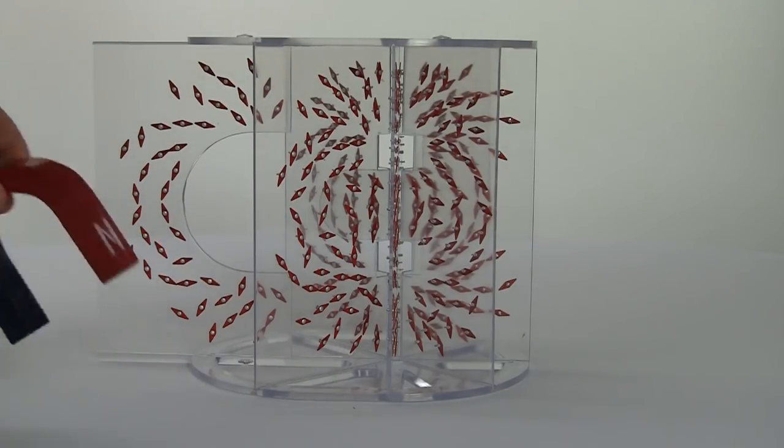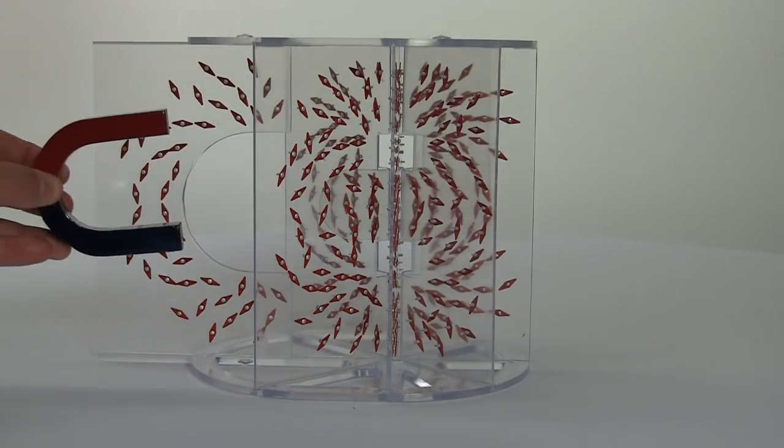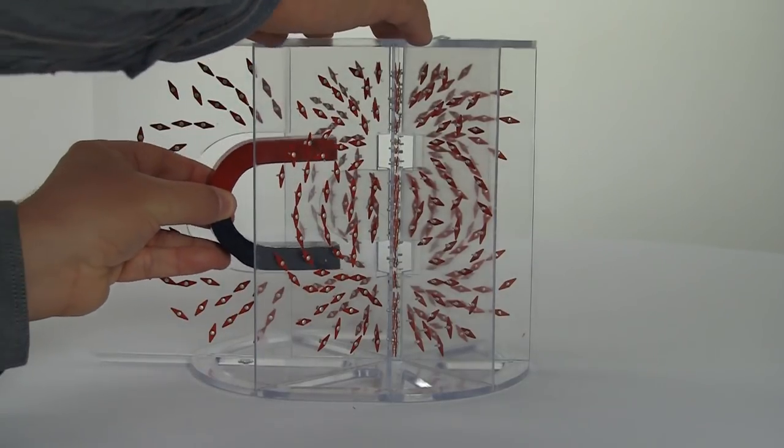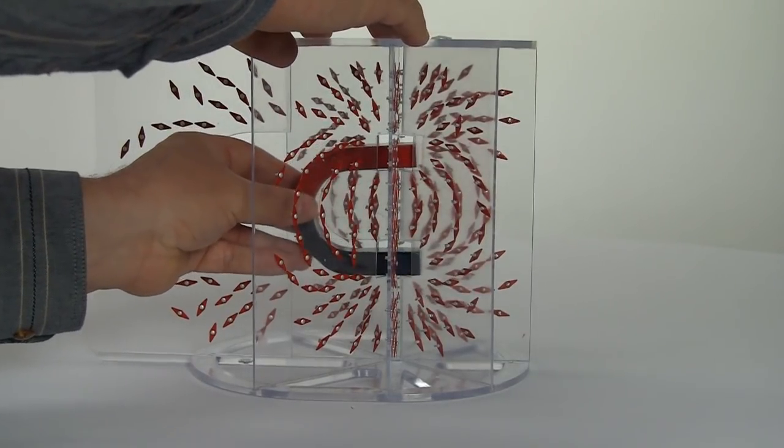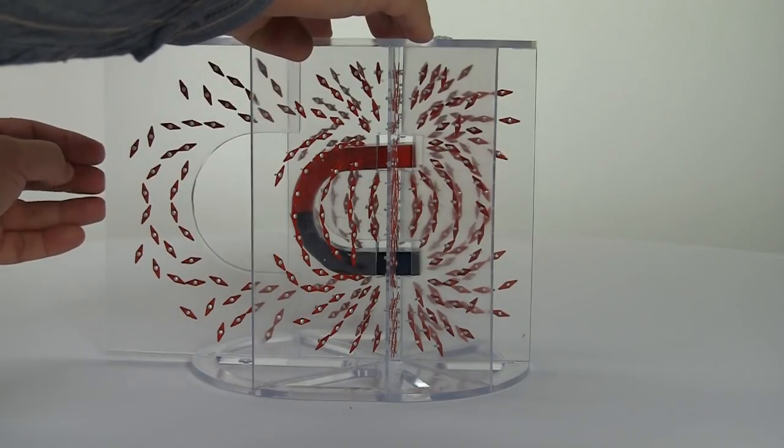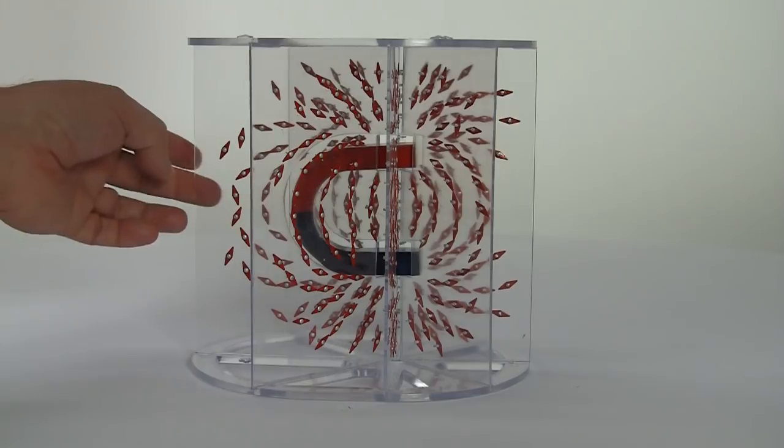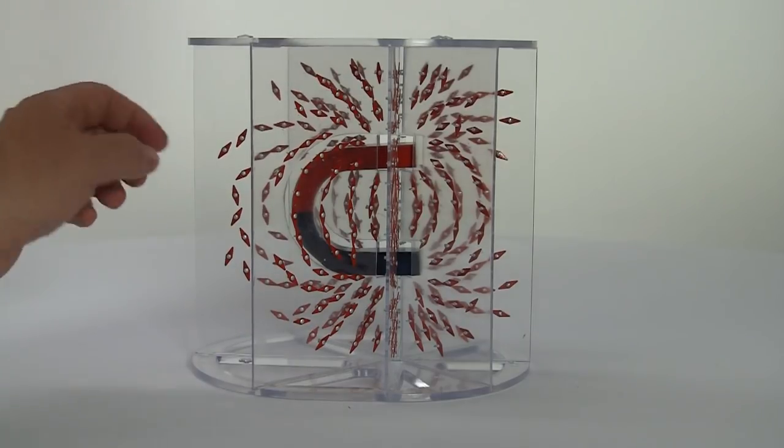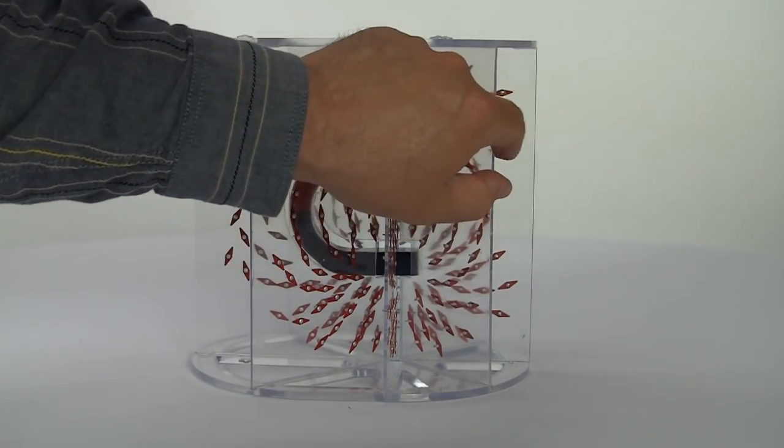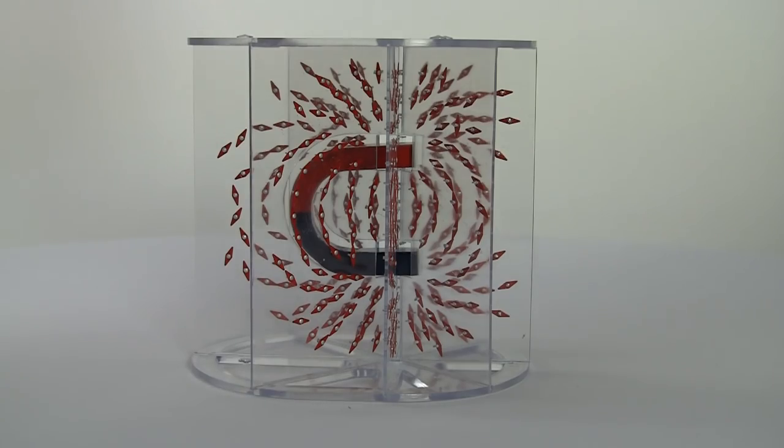Okay, here's the magnetic field demonstrator and we can insert the horseshoe magnet into the side and slide the panel in and give it a little tap just to get the compass needles aligned, and there we have it.